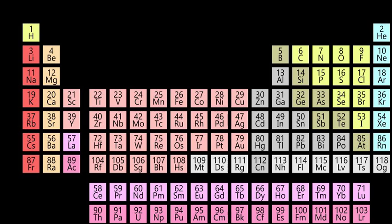The elements in a group have similar physical or chemical characteristics of the outermost electron shells of their atoms, i.e., the same core charge, as most chemical properties are dominated by the orbital location of the outermost electron.